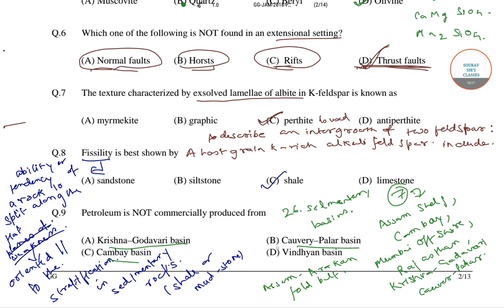So the correct answer of this question is option number D, that is the Vindhyan Basin, where petroleum is not commercially produced.